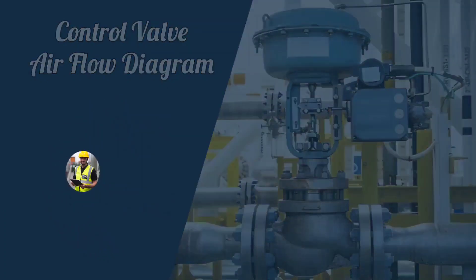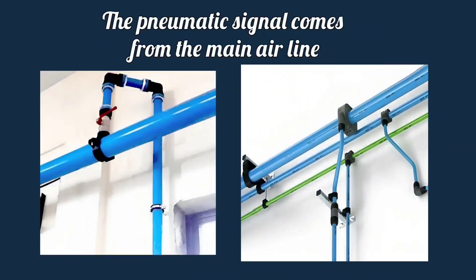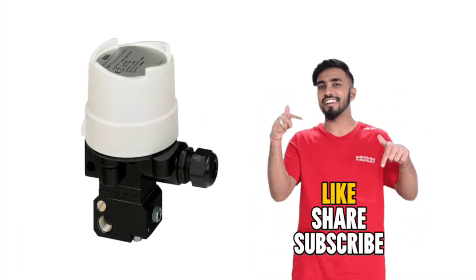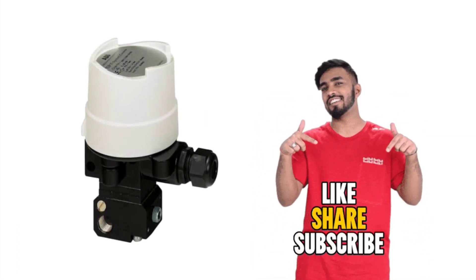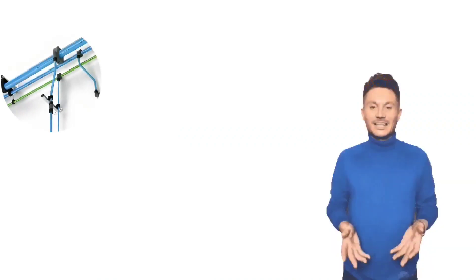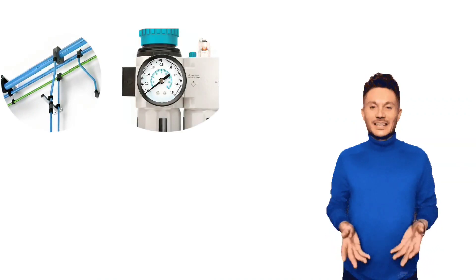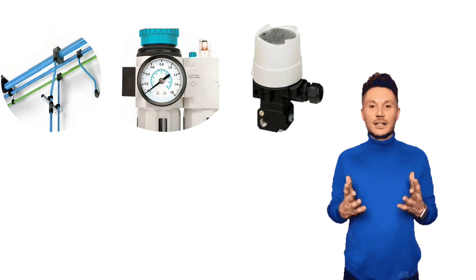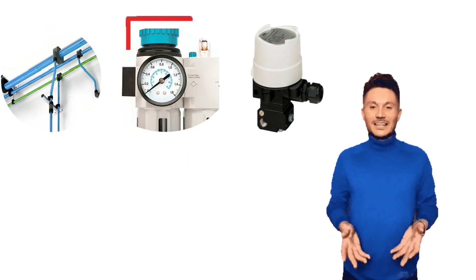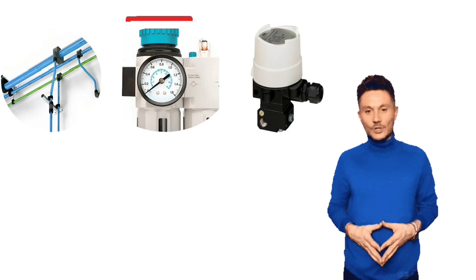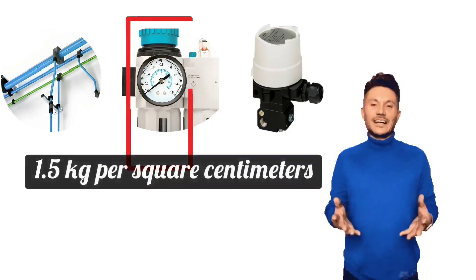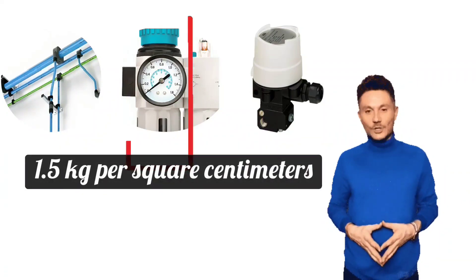Look friends, the pneumatic signal comes from the main airline. Here we have shown you the use of I2P converter. The signal from the main air supply through the air filter regulator will be passed to the I2P converter. In this air filter regulator means AFR, we will set the air pressure to 1.5 kg per square cm.